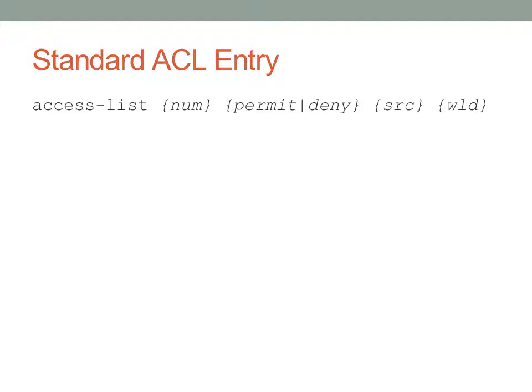Standard access lists are very simple. The syntax is: access-list, then the number of the access list, then permit or deny, then the source address, and the wildcard mask if applicable. The number must be between 1 and 99, or 1300 and 1999. These numbers represent the access lists themselves — access list 1 may have several different entries, access list 2 may have several different entries, and so on.